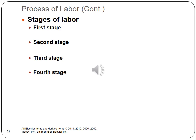The stages of labor: the first stage is onset of contractions to full dilation of the cervix, with three phases — latent, active, and transition. The second stage is full dilation to birth, with two phases: latent, where the fetus descends passively and rotates to anterior position due to uterine contractions; and active, with strong urges to push. The third stage is birth of the fetus until delivery of the placenta. The fourth stage is approximately two hours post-delivery of the placenta, during which the mother is assessed for complications.